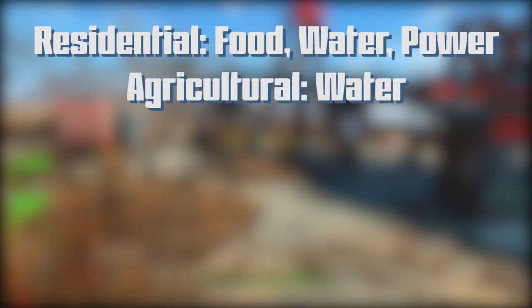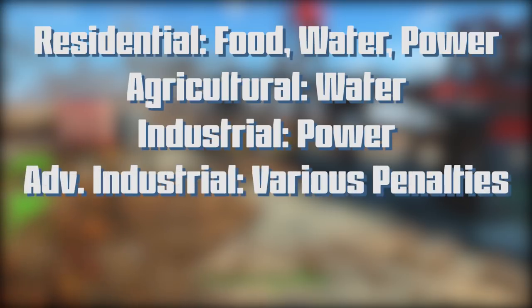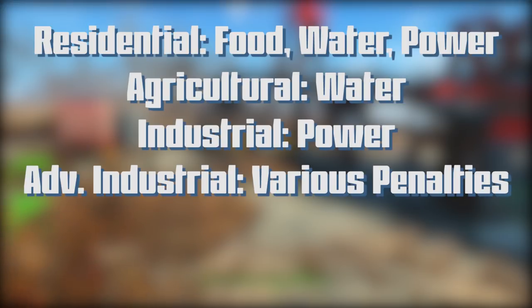For agricultural plots, as they start producing more food, they also start requiring additional water. Industrial will get more complex and start requiring more and more power. Then there's advanced industrial, which as mentioned in prior videos, is not meant for the early game. One of the reasons for that is they have a lot of negative penalties on your various needs, especially things like happiness and defense. You'll definitely want to check out the building plan selection for advanced industrial before you commit, because you need to make sure your settlement can handle the penalties.